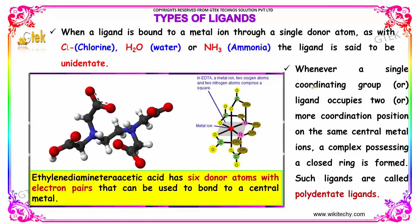Whenever a single coordinating group or ligand occupies two or more coordination positions on the same central metal ion, a complex possessing a closed ring is formed. Such ligands are called polydentate ligands.